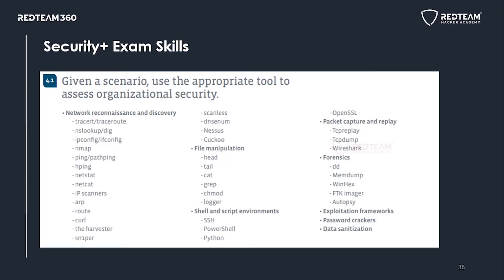Now we are coming to Domain 4: Operations and Incident Response. To assess the security of our environment, we will use different tools. There are network reconnaissance tools which help us understand information regarding our network — what machines are in our network, what operating systems, applications, open ports, running services, missing patches, and configuration issues. For that we will use different network reconnaissance tools.